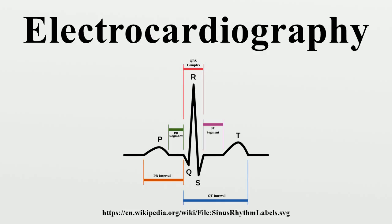A typical ECG tracing is a repeating cycle of three electrical entities: a P wave, a QRS complex, and a T wave. The ECG is traditionally interpreted methodically in order to not miss any important findings.